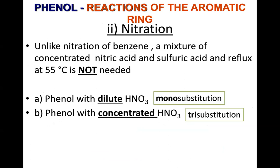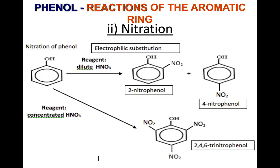Phenol, just like benzene, can also undergo nitration. Because phenol's ring is so activated, you don't need a catalyst and you don't need to heat it. For benzene, you need to heat at 55°C and use concentrated sulfuric acid as catalyst. For phenol, room temperature is fine. If you use dilute nitric acid, a gentler mono-substitution happens. The OH group activates the 2, 4, and 6 positions. With concentrated nitric acid, tri-substitution occurs where all 2, 4, and 6 positions are substituted by the nitro group.